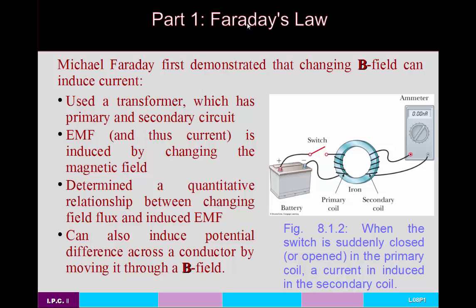This law is named after Michael Faraday, who was the first person to demonstrate and record that a changing magnetic field can induce a current. What he basically did was use a transformer that has a primary circuit and a secondary circuit. It consists of a battery hooked up to the primary circuit, which is a coiled wire wrapped around an iron core, with a switch that can be thrown on or off. There's also a secondary coil wrapped around the iron core and connected to an ammeter.